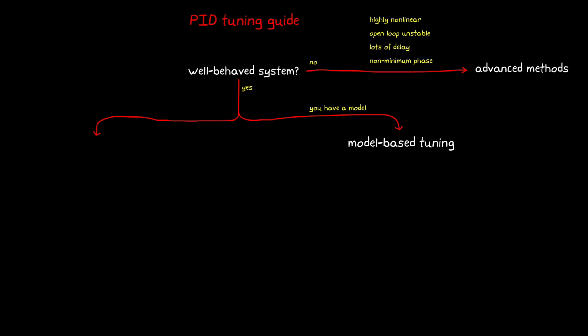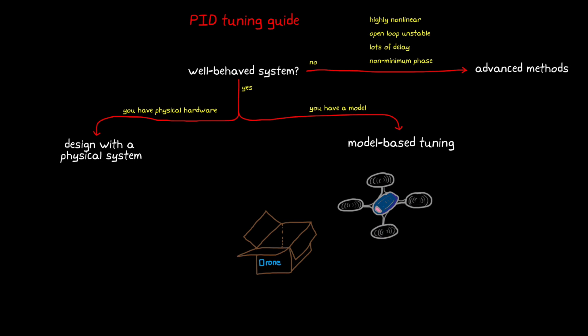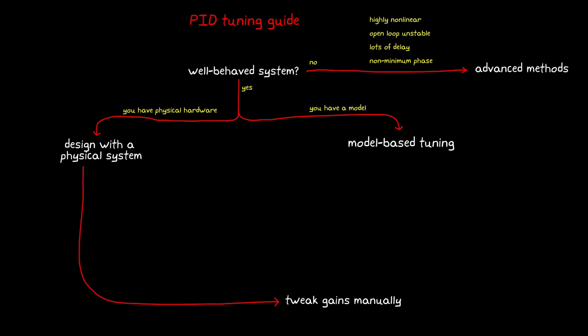Or the other situation is that you don't have a model, but you have access to physical hardware, either the real hardware or some prototype or mock-up that you can use for testing and design. This is the case if you purchased a consumer-grade quadcopter or some industrial machinery like a commercial thermal chamber that allows you to change the PID gains. More than likely, you're not going to get a mathematical model of these systems.